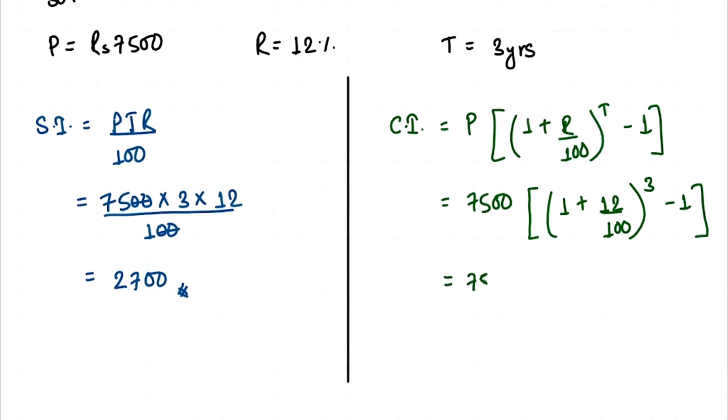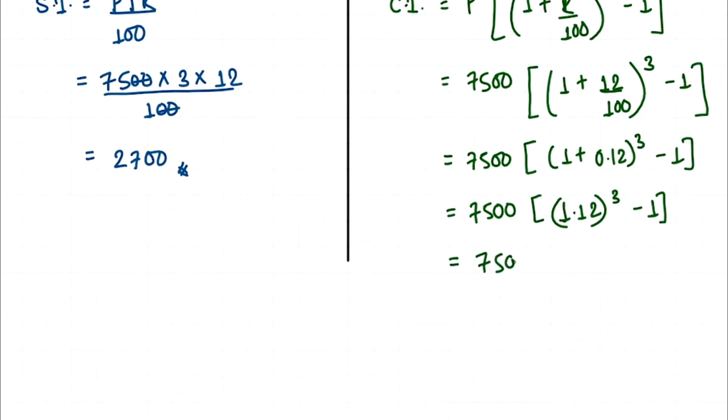This is going to be equal to 7,500 bracket, 1 plus 0.12 cube minus 1, which equals 7,500 bracket 1.12 cube minus 1. This equals 7,500 times 1.404928 minus 1, which gives us 7,500 times 0.404928.